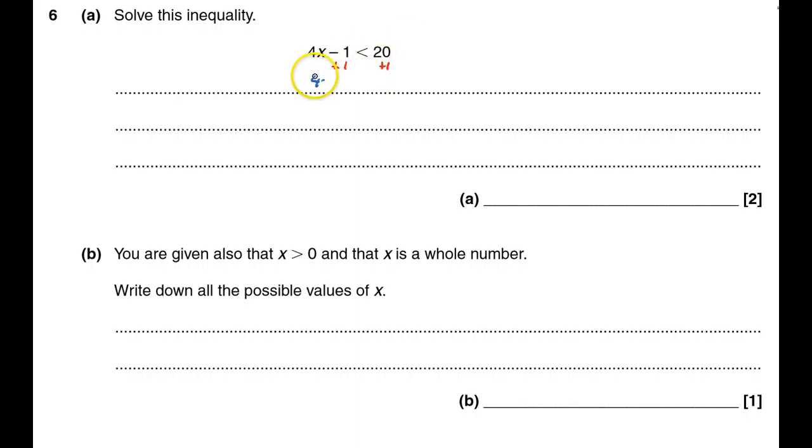And that will say that 4x is less than 21. And I don't want 4 of them, I just want 1 of them, so I need to divide both sides by 4. And that will give me x is less than 21 divided by 4, which is 5.25.